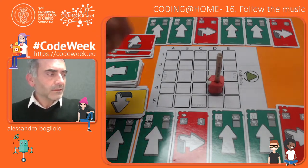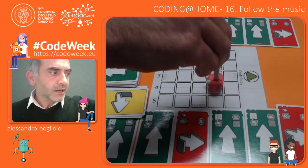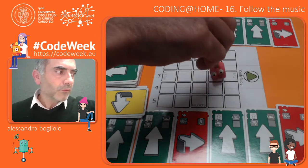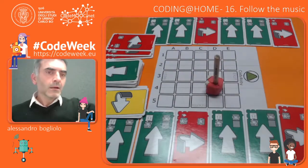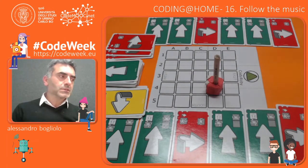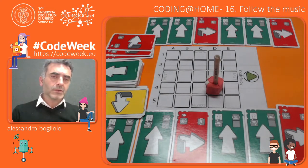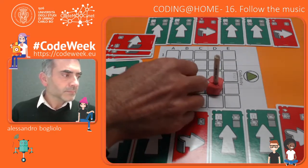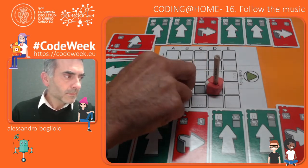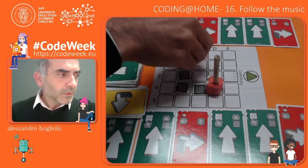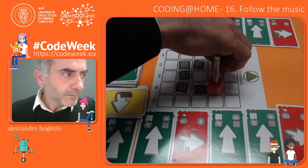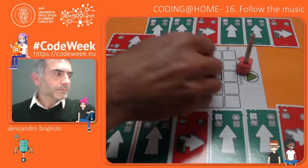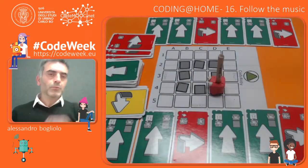Now let's see what happens when we execute the instructions: move forward, move forward, turn right, move forward, turn right, move forward, move forward, turn right, move forward, move forward, turn right, move forward, move forward, turn right. So this sequence of instructions brings the robot back to the starting point after having followed a square path. We made Roby draw a square on the checkered board.